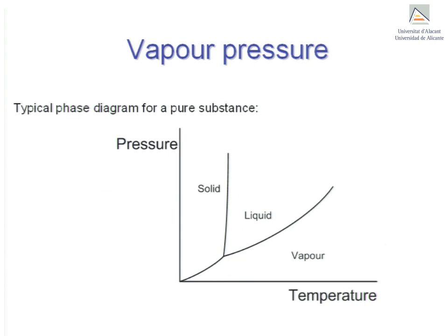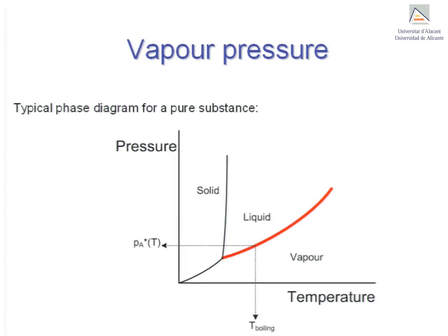Now we consider the concept of vapor pressure. It is easier to understand if you keep in mind the phase diagram of a pure substance, such as the one shown here. The equilibrium lines separating the various phases — solid, liquid, and vapor — constitute a succession of infinitely closely spaced points obtained from experimental studies. These points correspond to an X coordinate (temperature) and a Y coordinate (pressure) in a P-T phase diagram. A certain line in this diagram is of particular interest: the equilibrium line between the liquid and vapor phase, highlighted in red. This line is made up of an infinite number of closely spaced points whose coordinates are boiling point temperature and vapor pressure.